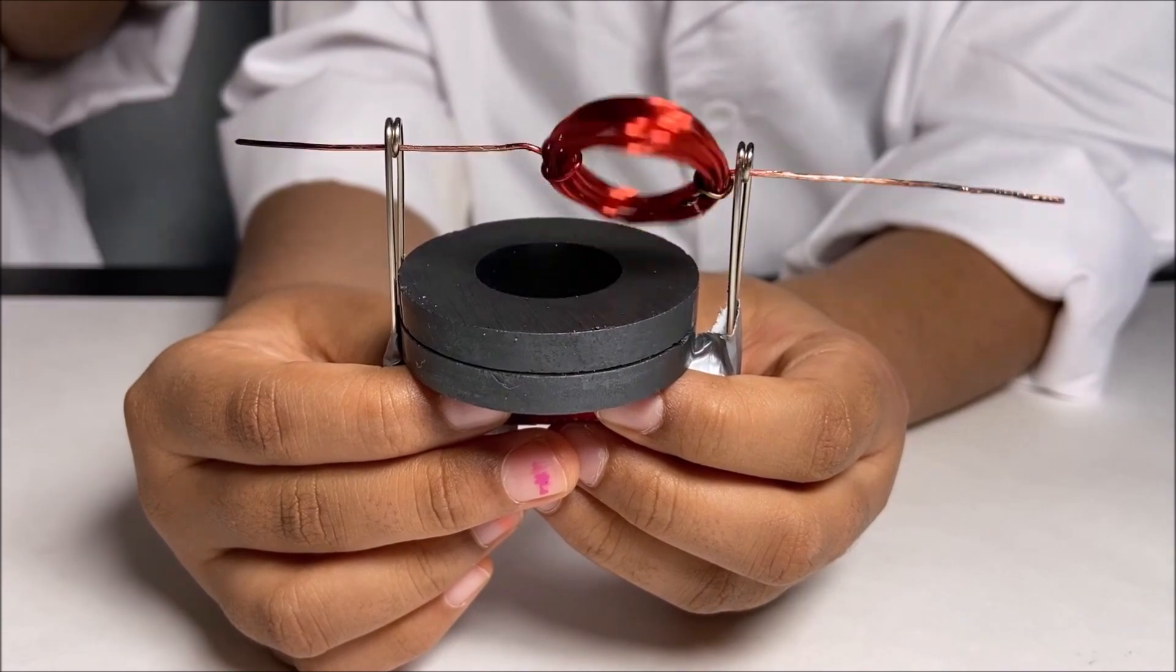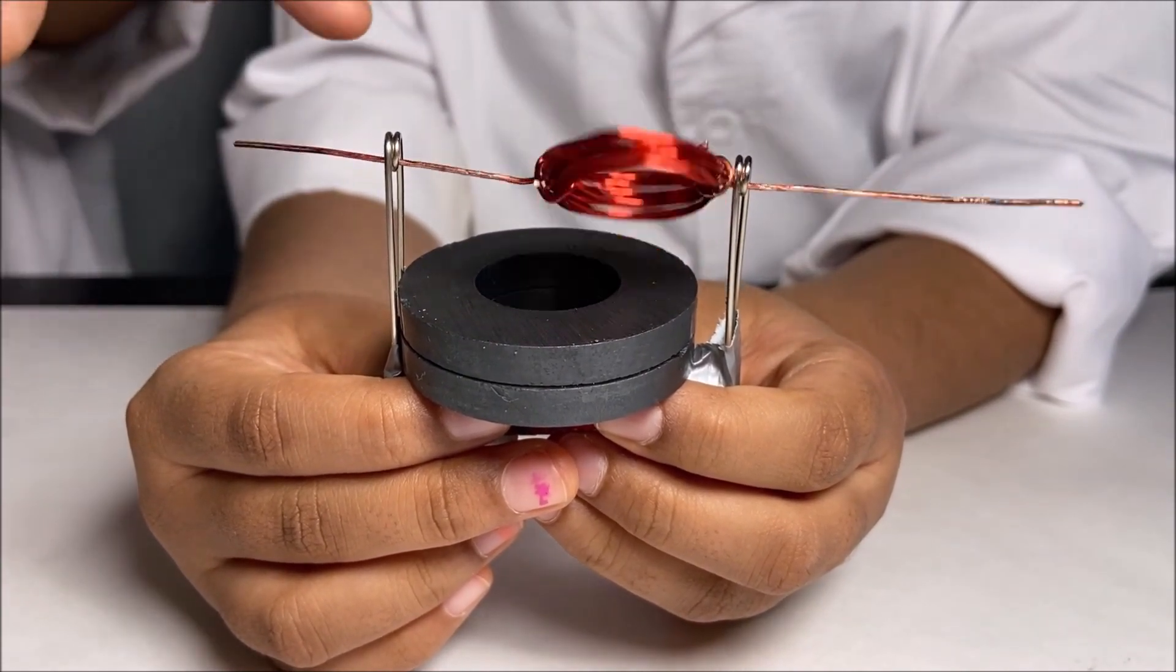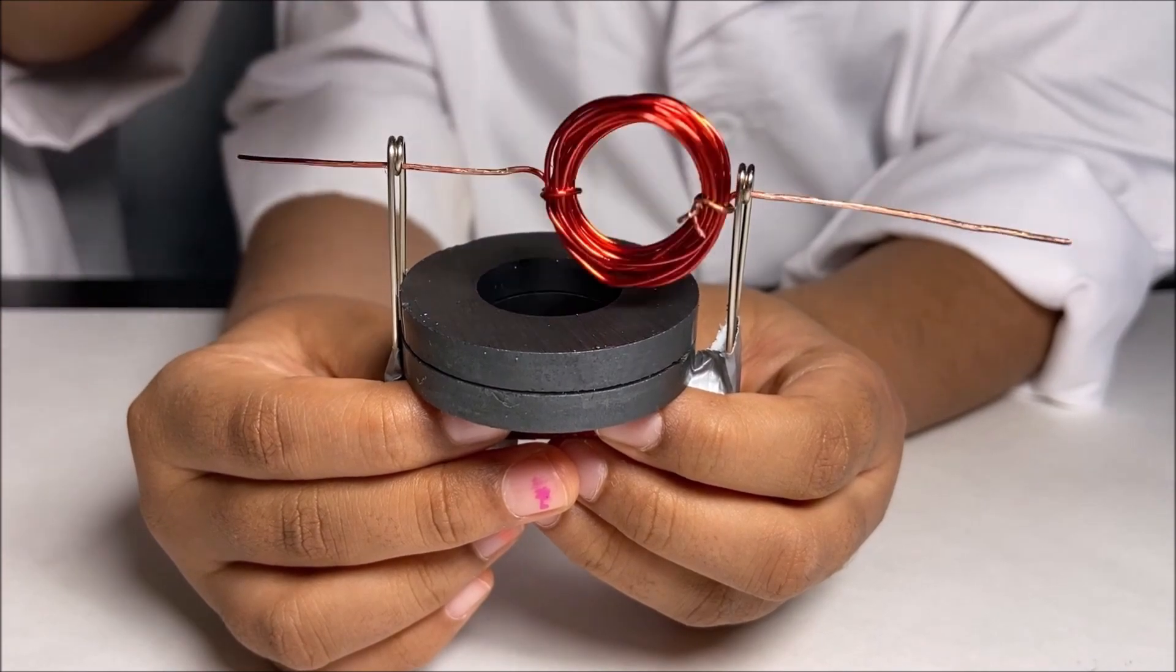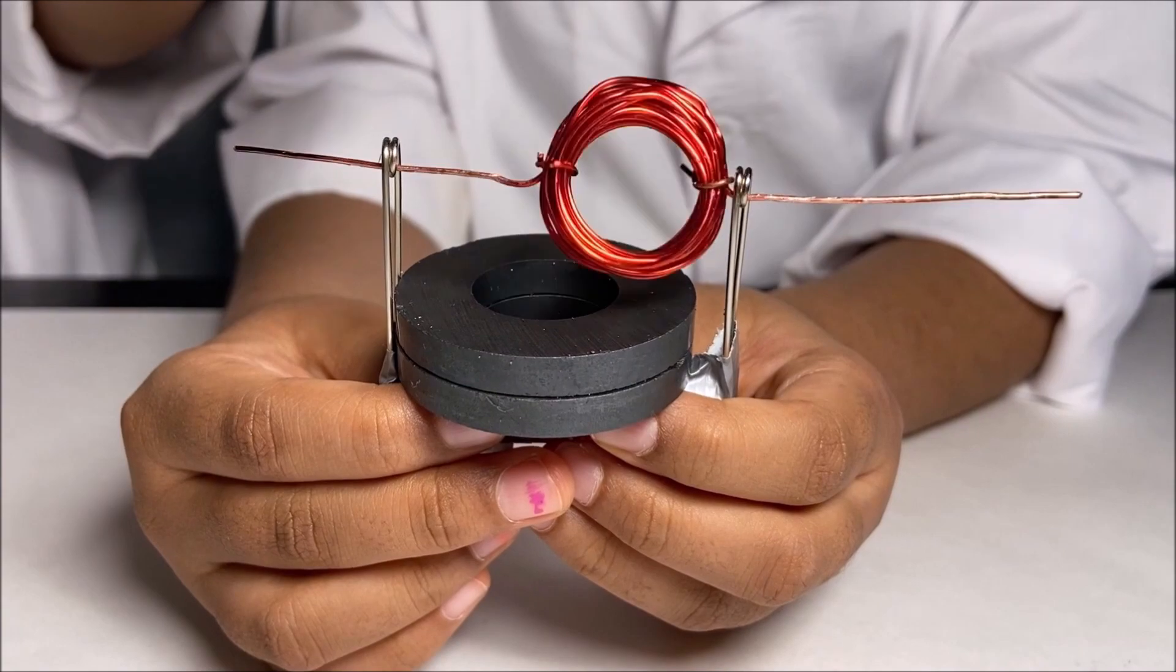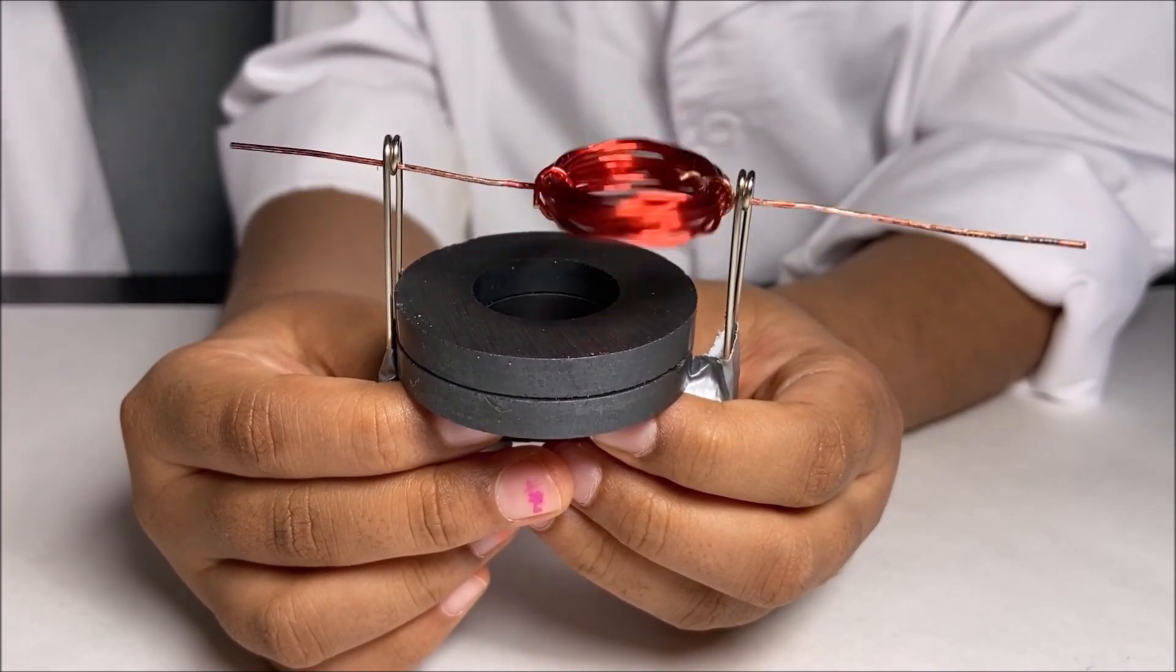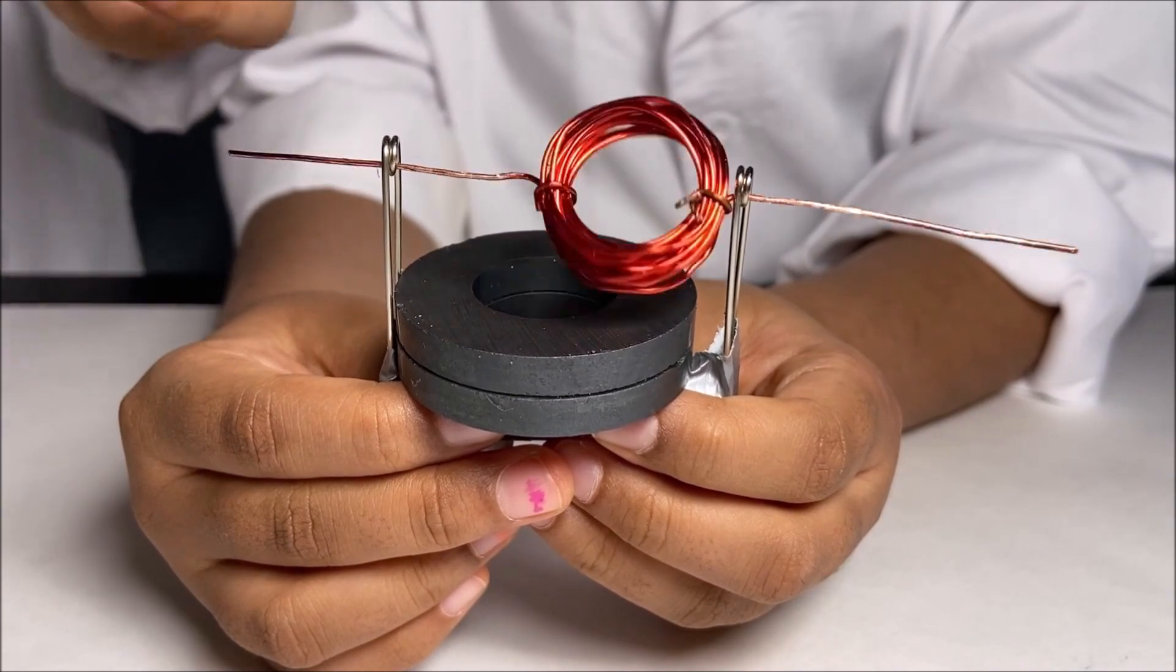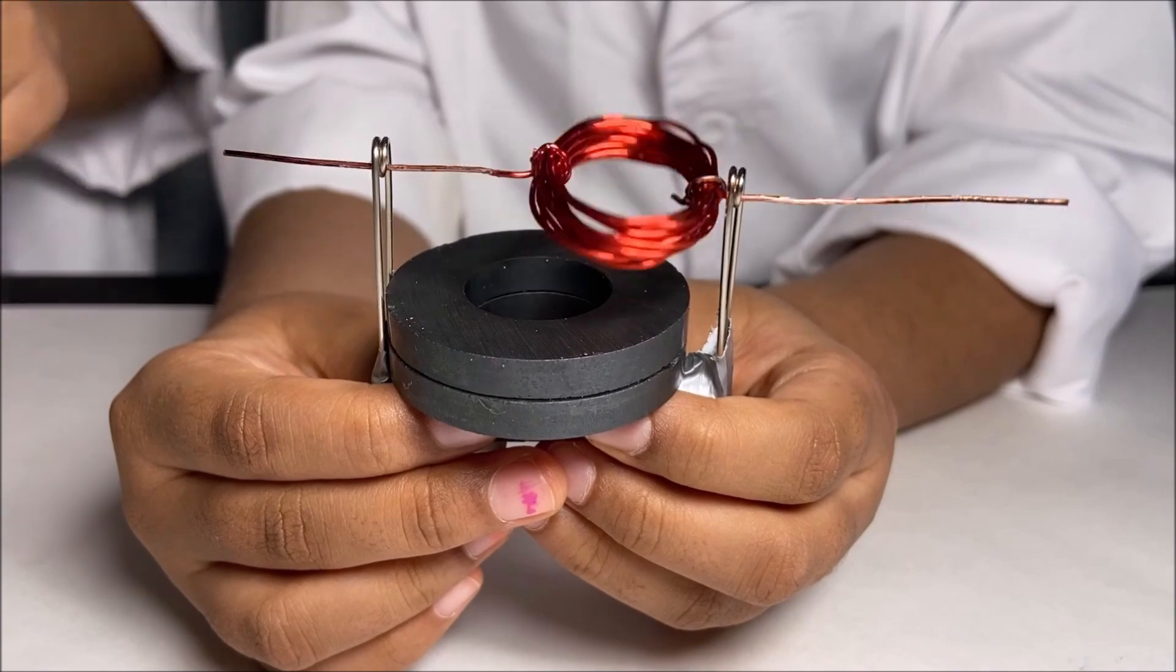So what's happening is this permanent magnet has its own magnetic field, and when the current passes through the coil it creates a second magnetic field. Opposite poles attract and same poles repel, and that repelling force makes the copper coil spin.